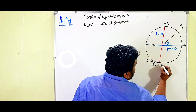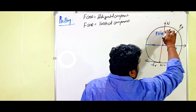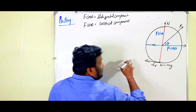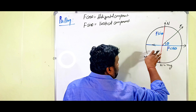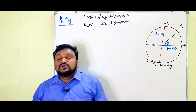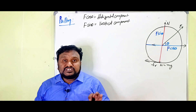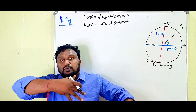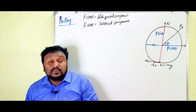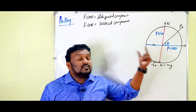The normal force acts in the upward direction and weight Mg acts in the downward direction. In the vertical direction, the roller is moving in the forward (horizontal) direction, so the net force in the vertical direction is zero. Therefore, the upward forces equal the downward forces.